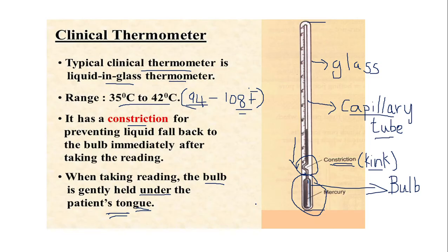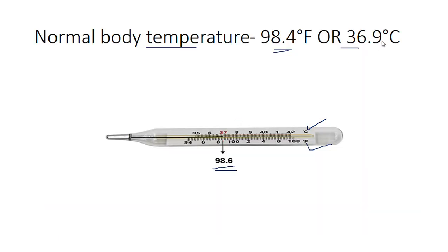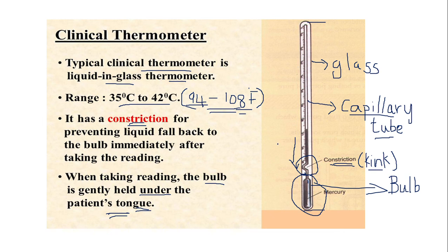Learn the construction of the clinical thermometer carefully. Exam questions may include: What is the purpose of the constriction in a clinical thermometer? What is the range of scale for a clinical thermometer? What is the normal body temperature — 36.9 degrees Celsius or 98.4 degrees Fahrenheit? You will also be expected to draw and label the diagram. Please note these points carefully. Thank you.